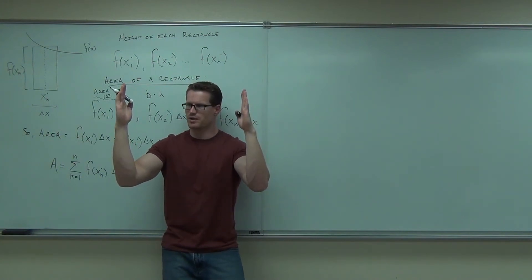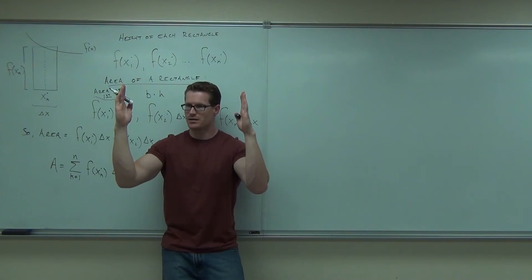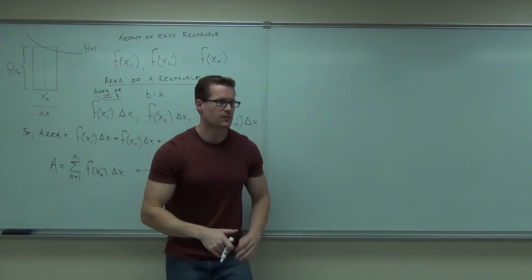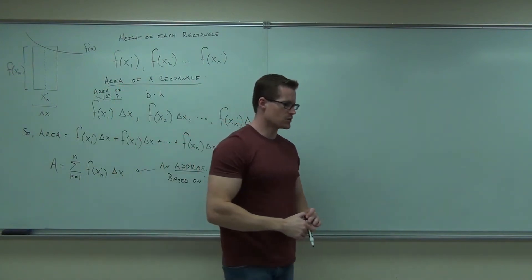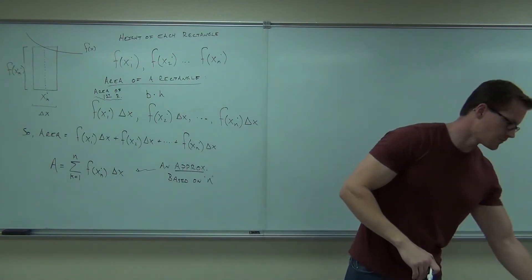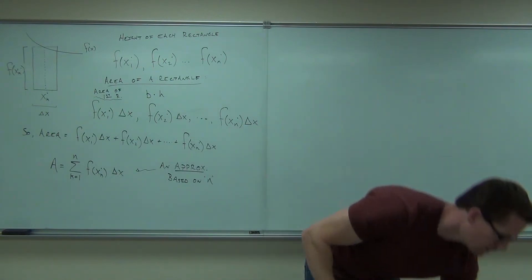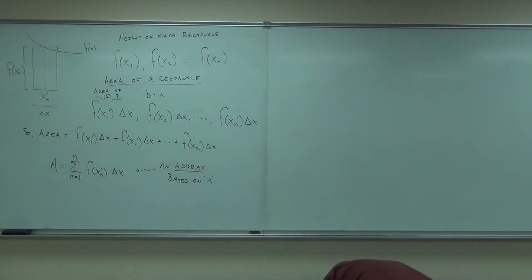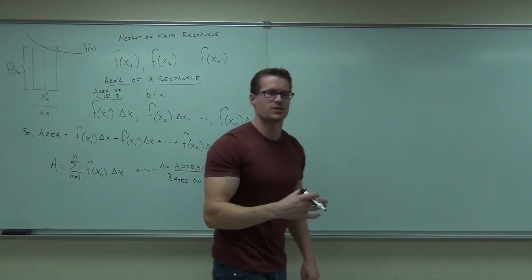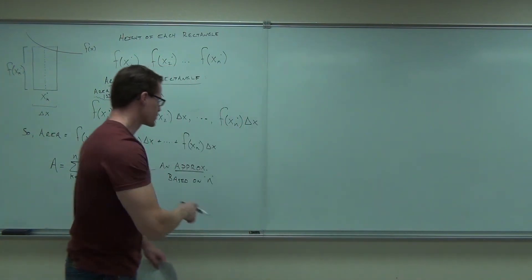Haven't we covered the limit before? It says, if I let my n go to infinity, that changes this from an approximation to an exact thing. So how do we make it better?